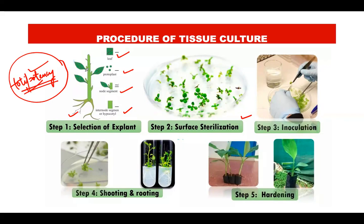The second step is surface sterilization of the explant. In natural environments, plant cells are exposed to dirt and microbial particles, creating a high risk of contamination when introduced to artificial medium. Surface sterilization means removing all contamination from the surface of the explant. Different chemicals are used for this, such as mercuric chloride and sodium hypochlorite, applied to the explant for specified periods of time.